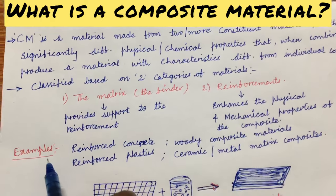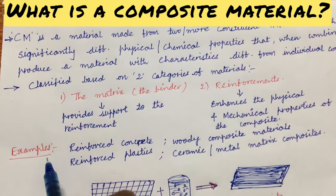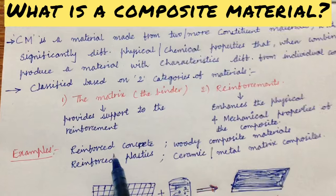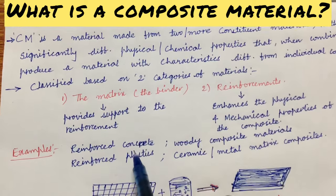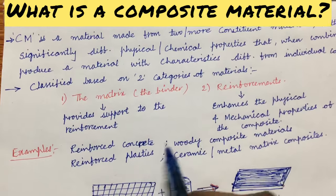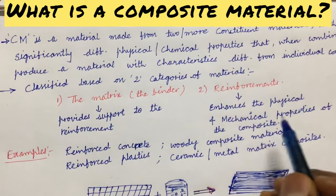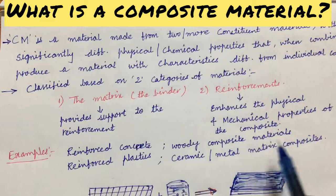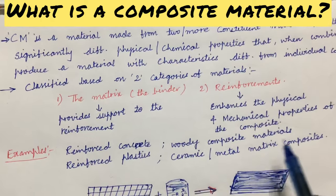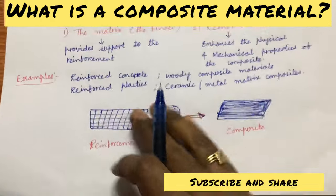Examples of composite materials include reinforced concrete, reinforced plastics, woody composite materials, ceramic matrix composites, and metal matrix composites.